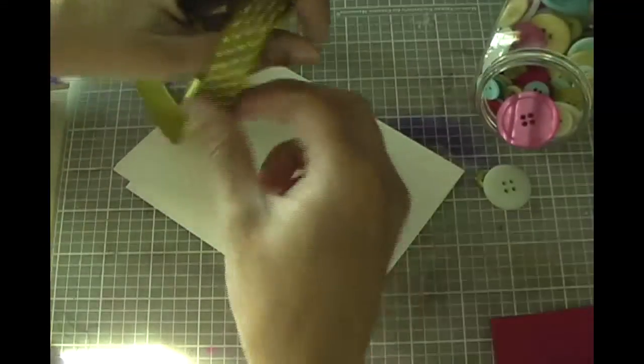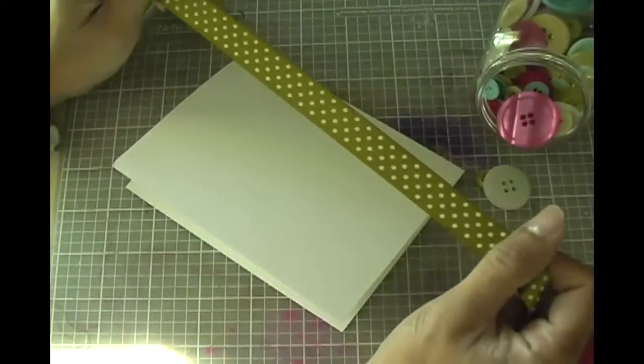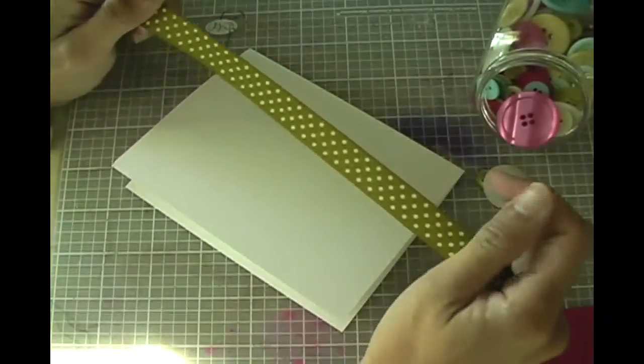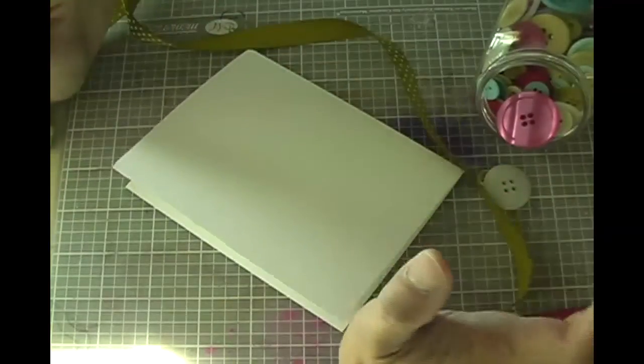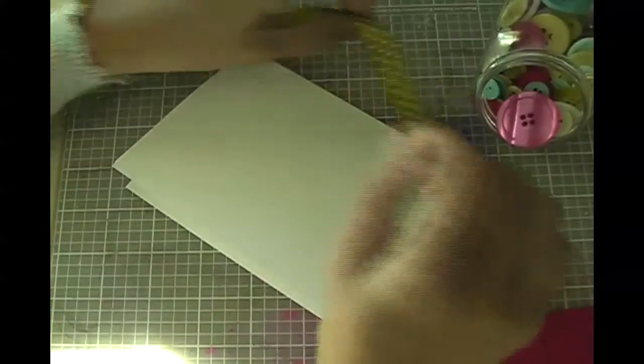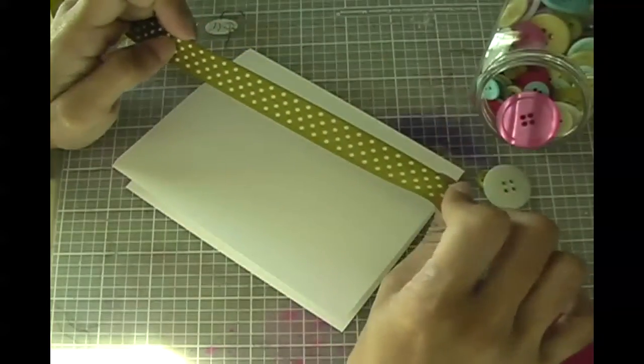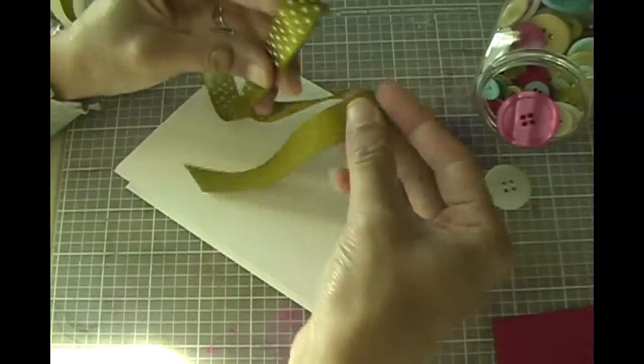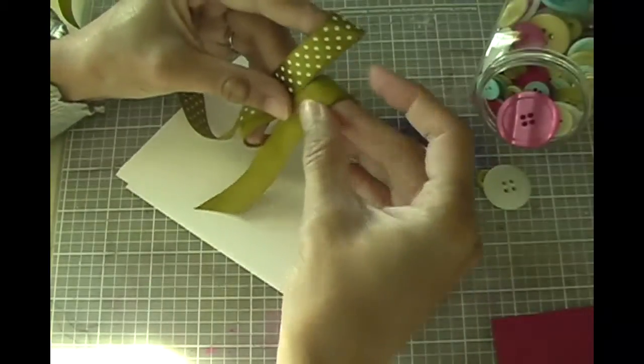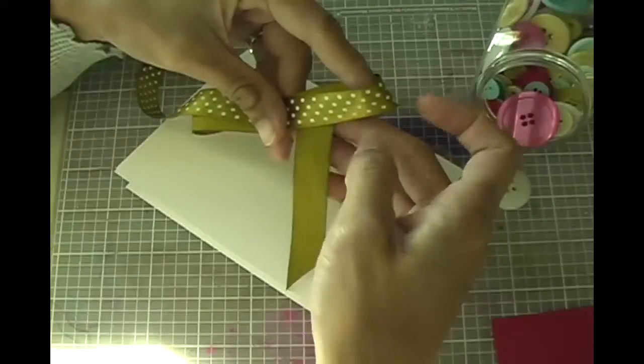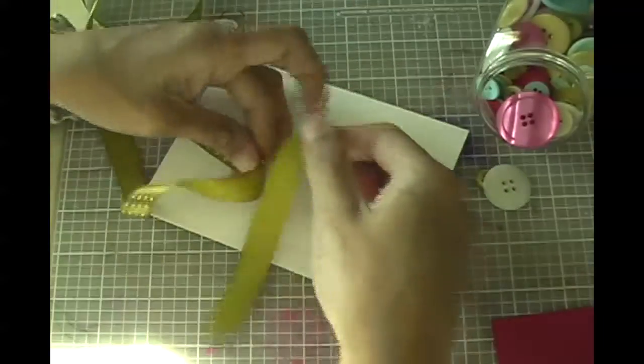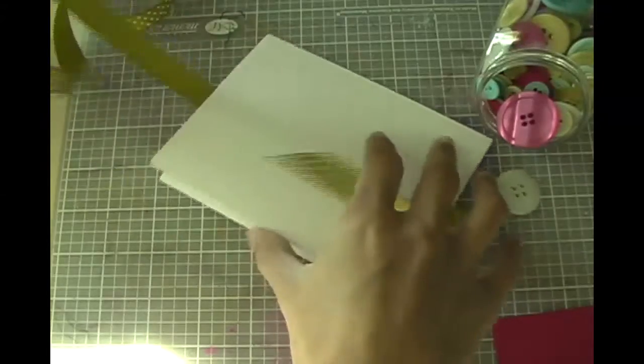Alright, so this next portion I have a polka dot ribbon and the way I like to do my polka dots is that the more polka dots I see, the better I like the ribbon. I don't like it when I see dots here and then this solid coming out that way. And it's a matter of preference, but I'm kind of particular.